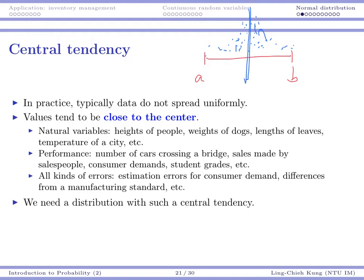There are many natural examples. If we collect a set of people, their heights typically follow this property. The weight of many dogs, the lengths of many leaves, or the temperature of a city — these natural variables basically have this central tendency.